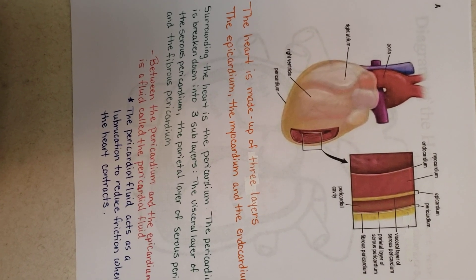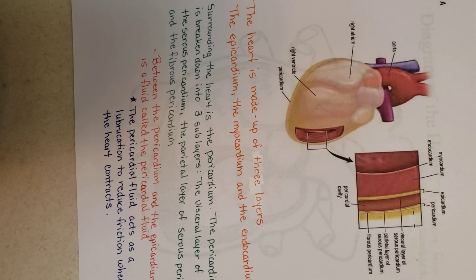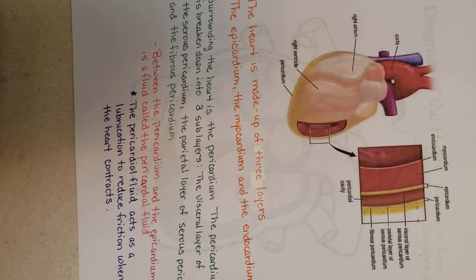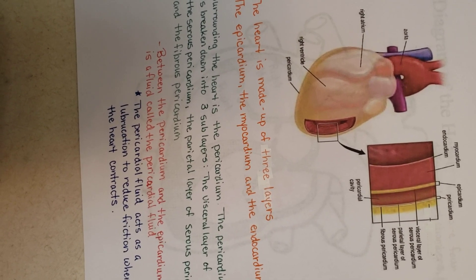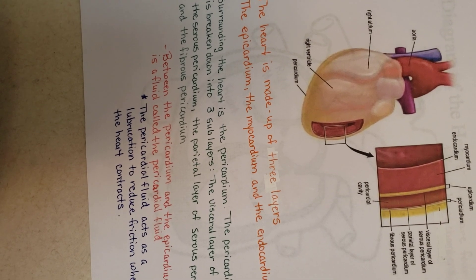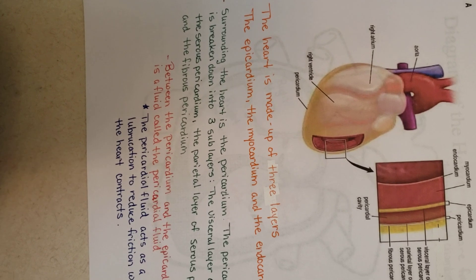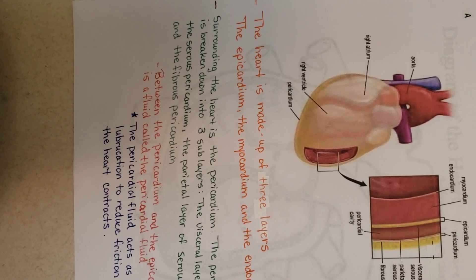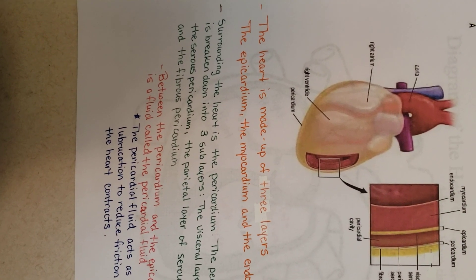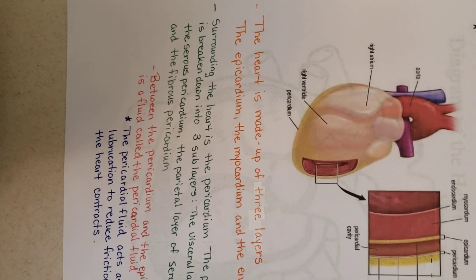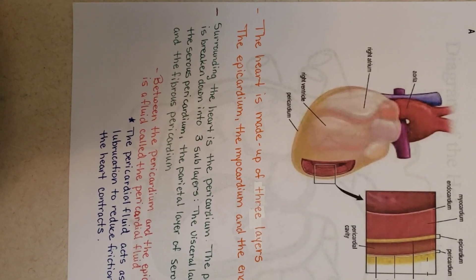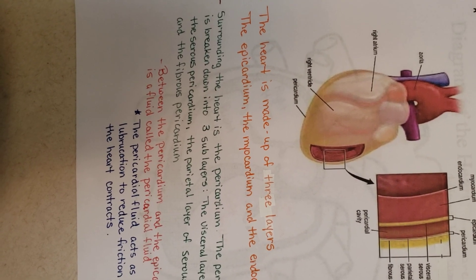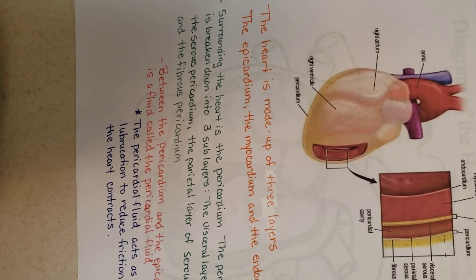The myocardium, which is the middle layer, is a thick muscular layer that consists of cardiac muscle fibers, or cells, that are responsible for the pumping action of the heart. The heart's outer layer, called the epicardium, contains blood capillaries, lymph capillaries, nerve fibers, and fat. The layer surrounding the heart is called the pericardium, which is a double-walled sac that encloses the heart. The pericardium serves as support and protection, and anchors the heart to the diaphragm and the great vessels. The small amount of fluid found between the pericardium layers is called pericardial fluid, which helps minimize friction between layers as they rub against each other with each heartbeat.